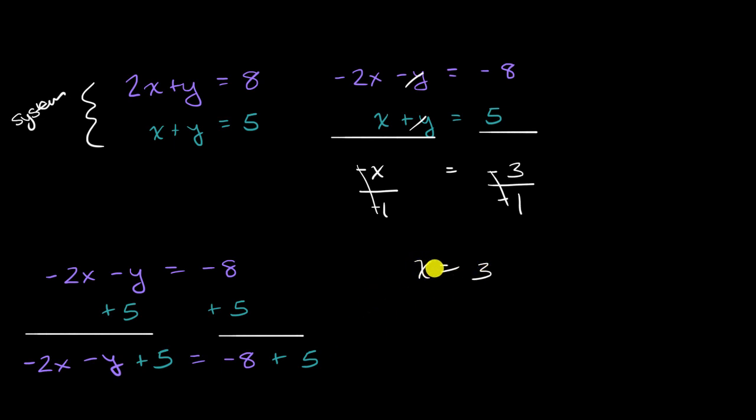And so that would be the x value of that x, y pair that satisfies both, and then to figure out the y value, you would say, all right, if x = 3, I should be able to go back into either of these equations to find the corresponding y value, and it's a little bit easier to go into that second one. You could say, all right, 3 + y = 5. 3 + y must be equal to 5, and then, of course, if you subtract 3 from both sides, because once again, we're saying 3 + y is literally equal to 5.